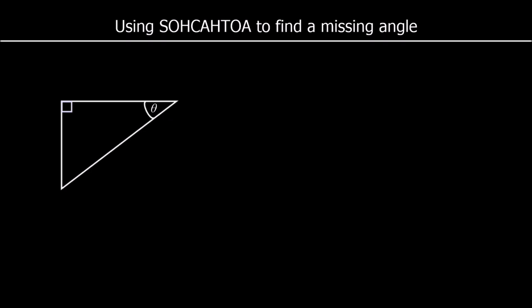In the previous video, we introduced the trigonometric ratios — sin, cos, and tan — which we used to find a missing length in a right-angled triangle. So just to recap: if this is the angle in the question, we call the longest side the hypotenuse (H), the one opposite the angle we're using the opposite (O), and the one in between our angle and the right angle the adjacent (A).